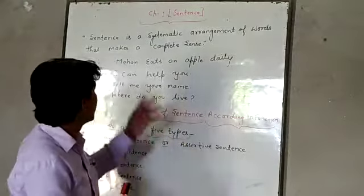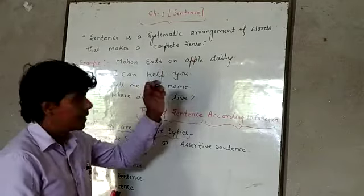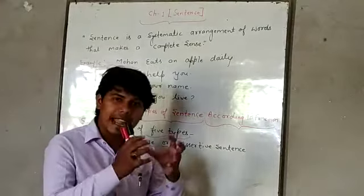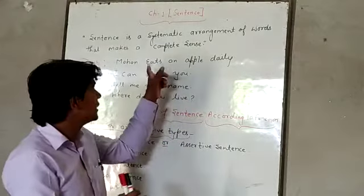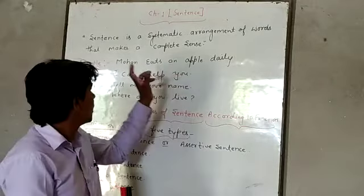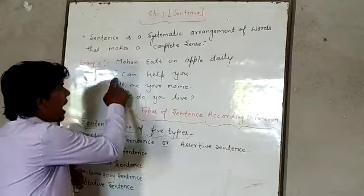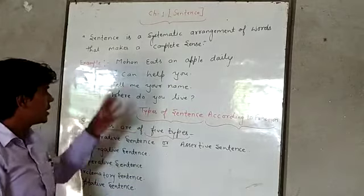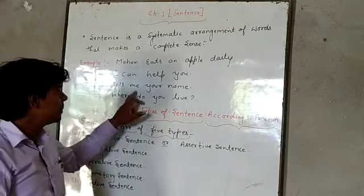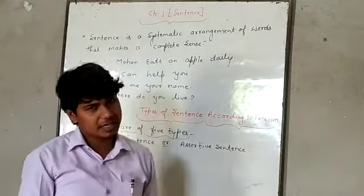I have written some examples. First: 'Mohan is a good boy.' These words are put in a systematic arrangement, that is why they give a complete sense — this is a sentence. Second sentence: 'I can help you' — this is also a sentence. Third sentence: 'Tell me your name' — this is also a sentence.